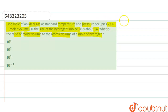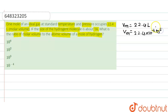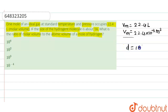For one mole of ideal gas, the molar volume is 22.4 liters. If we convert this to meter cube, it will be 22.4 into 10 to the power minus 3 meter cube. We have to consider one mole of hydrogen gas and calculate the ratio of molar volume to the atomic volume of one mole of hydrogen gas.